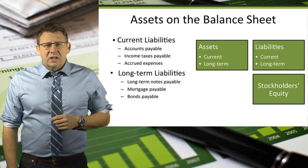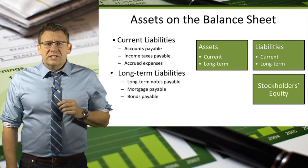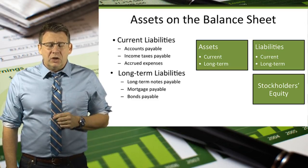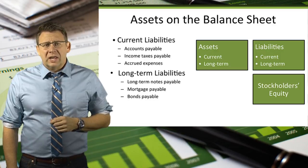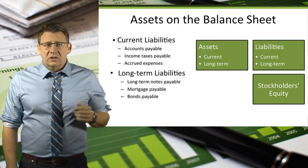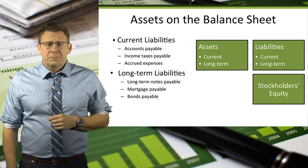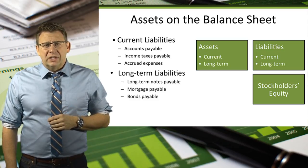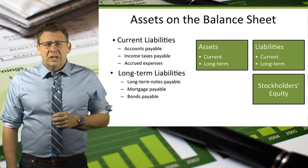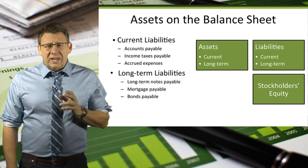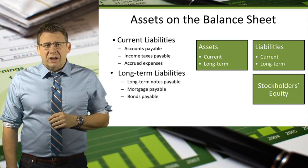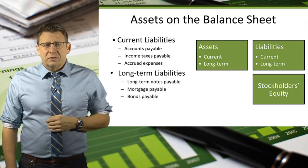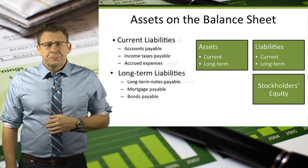Current liabilities are those debts that will be paid in one year or less, and there are some examples listed on the slide. Long-term liabilities are those liabilities that are expected to take more than one year to pay off, and there are some common examples listed there as well.